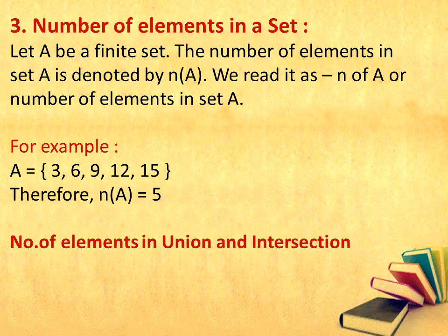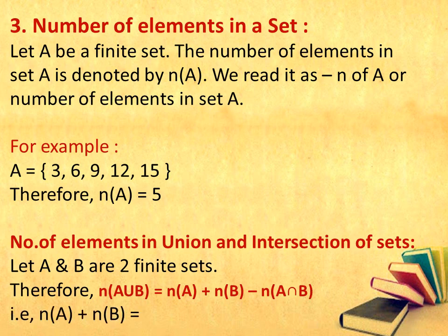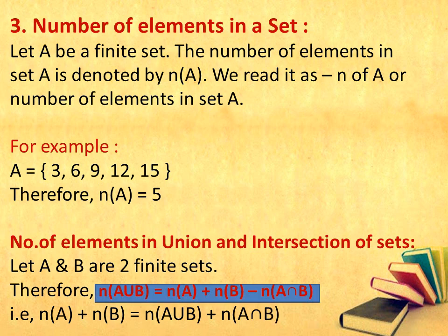Let us next see the number of elements in the union and intersection of sets. Let A and B be two finite sets. Therefore, N(A union B) is equal to N(A) plus N(B) minus N(A intersection B). This is an important formula, also called De Morgan's law, which you will use while solving problems. Again: N(A union B) = N(A) + N(B) − N(A intersection B).